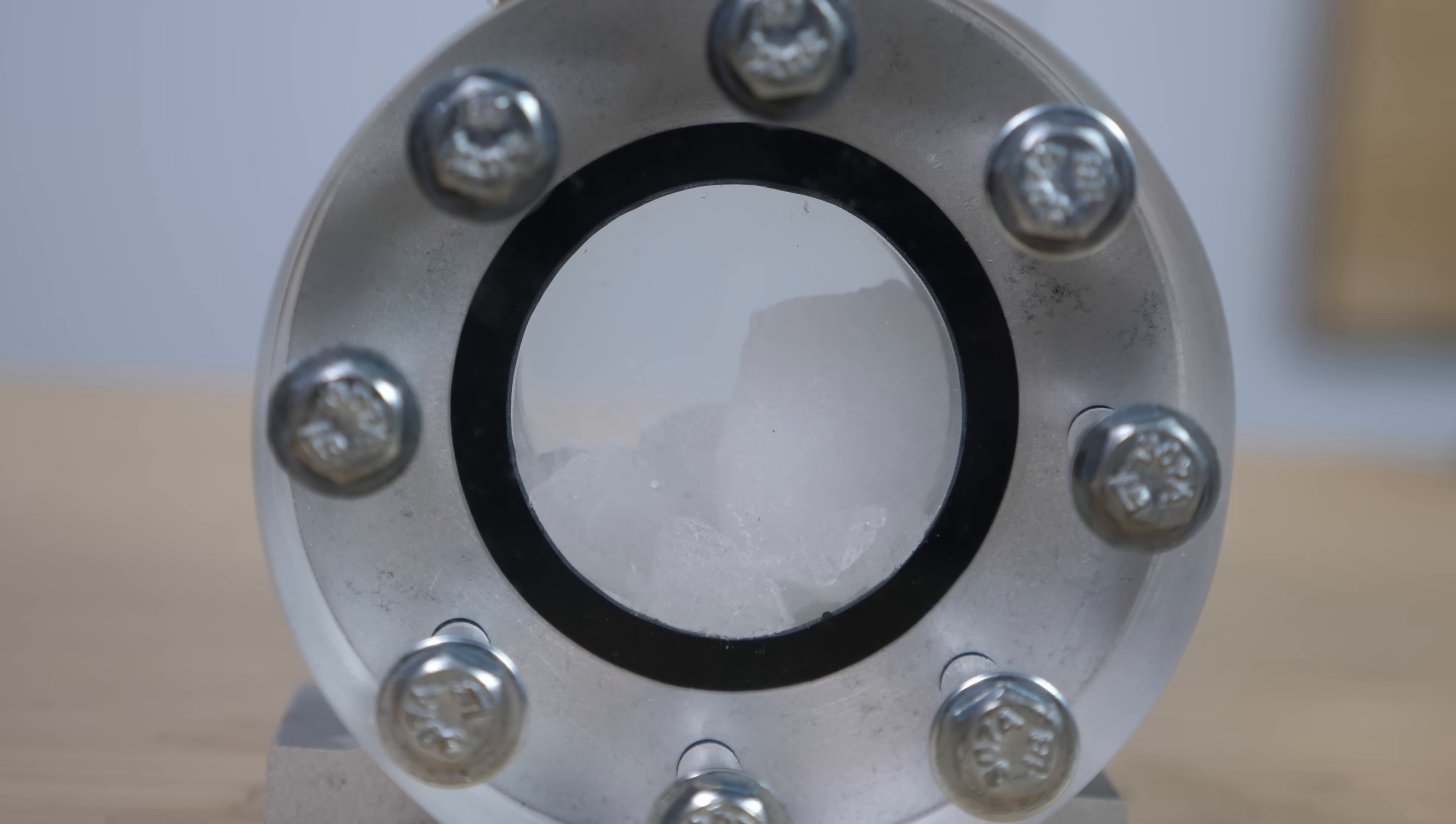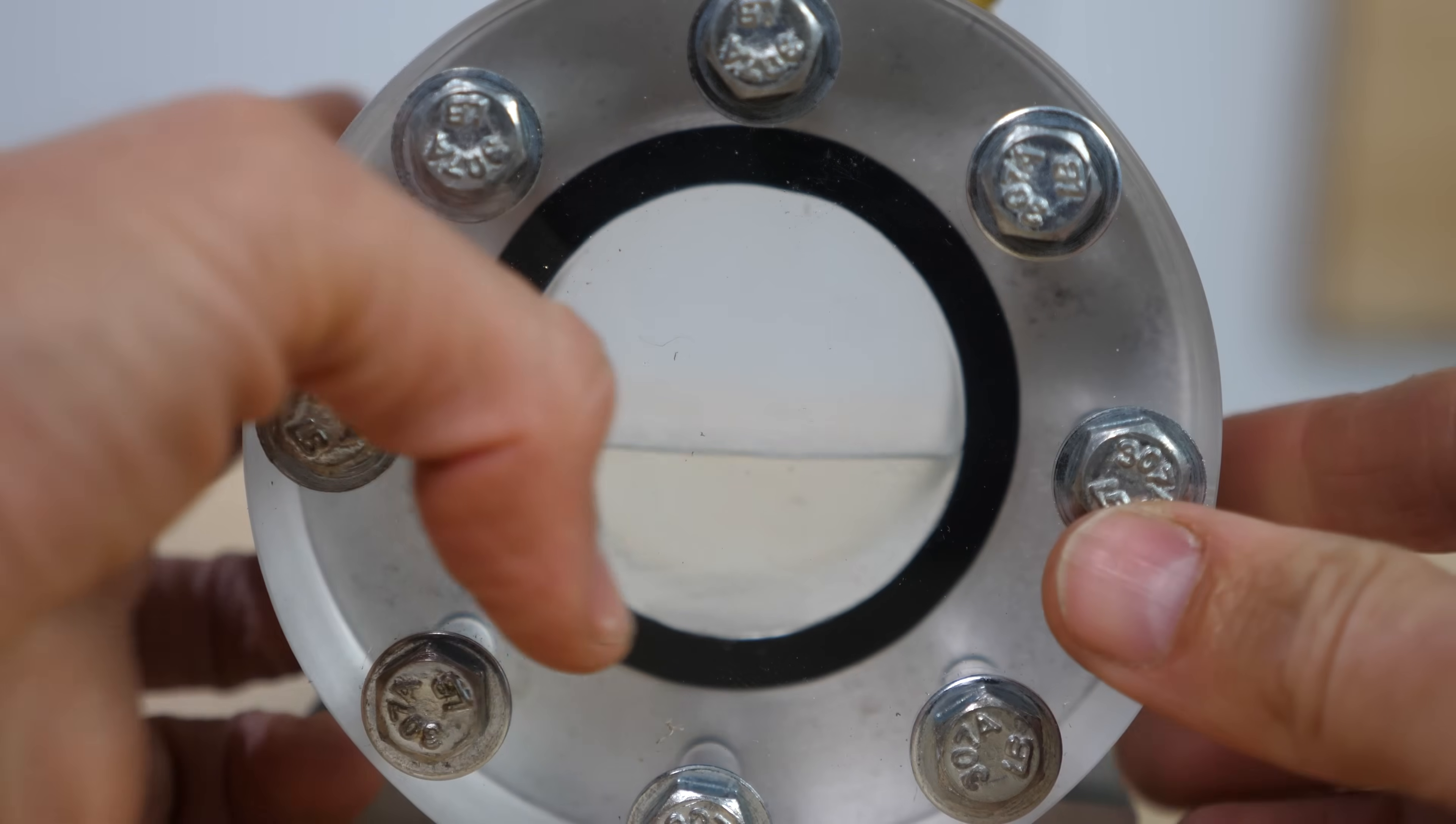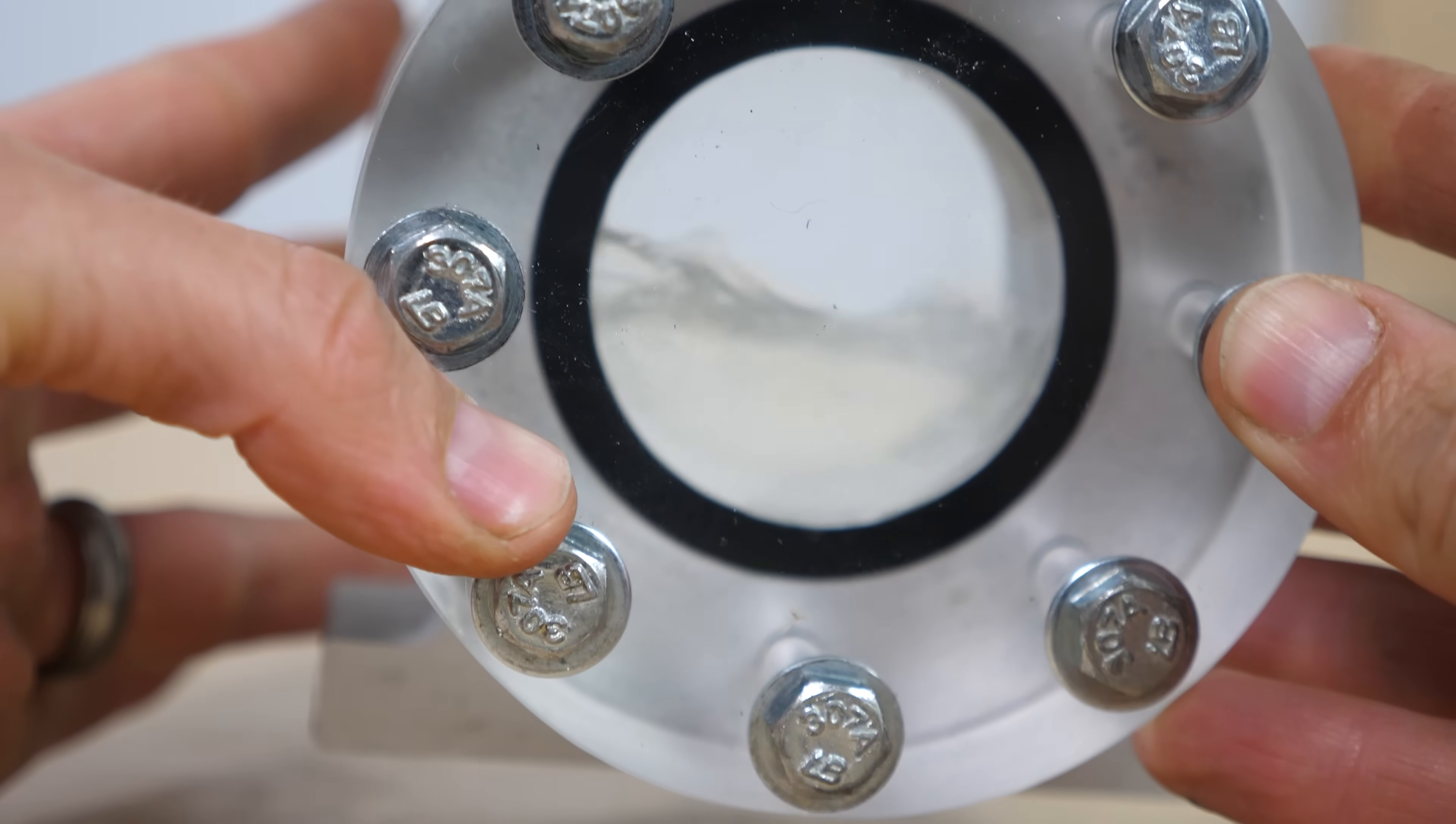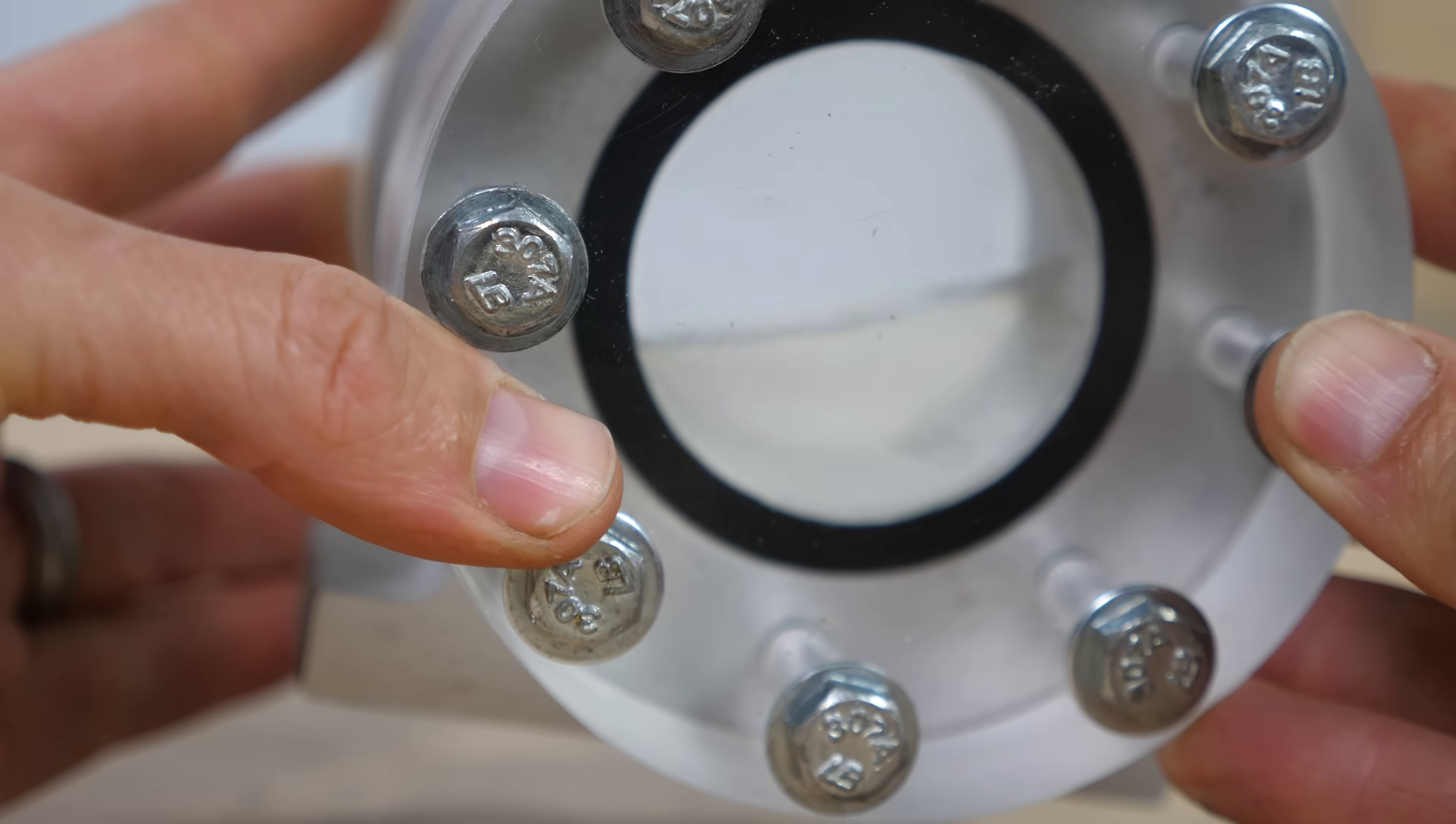As soon as the pressure increases, the dry ice stops turning from a solid directly into a gas. Oh, there it goes. But it can now turn into a liquid. So now we've got liquid CO2 in here. If I release the pressure, it freezes into solid CO2 again.